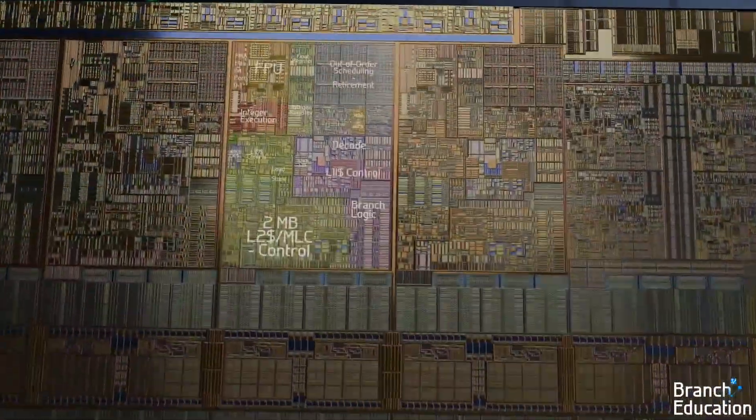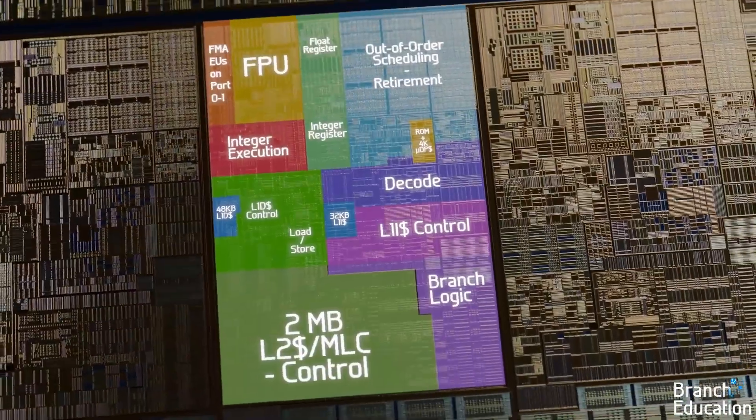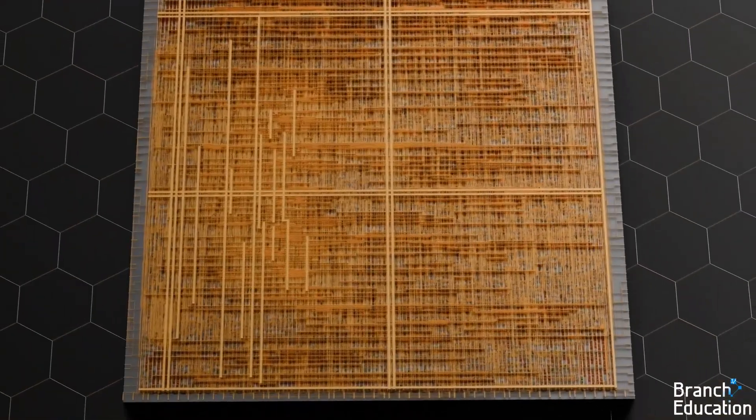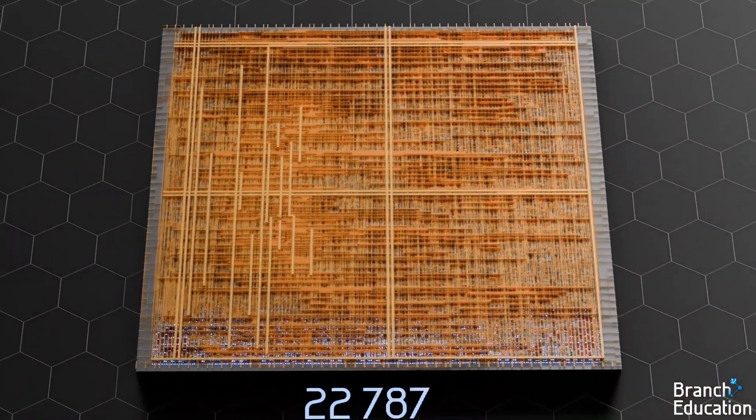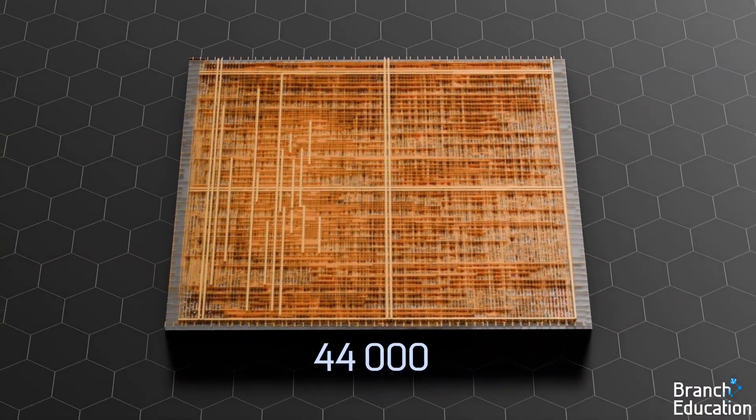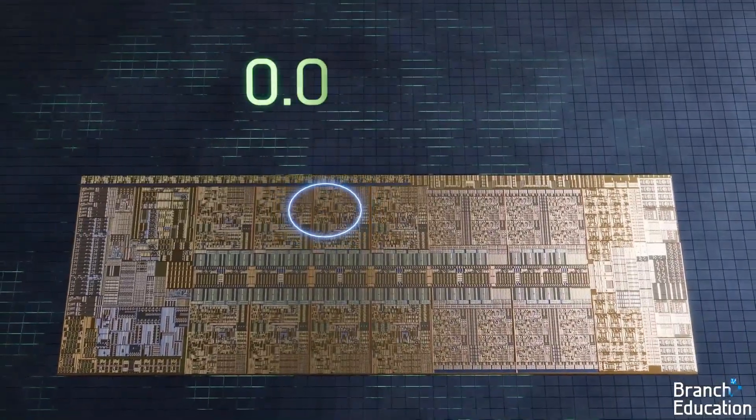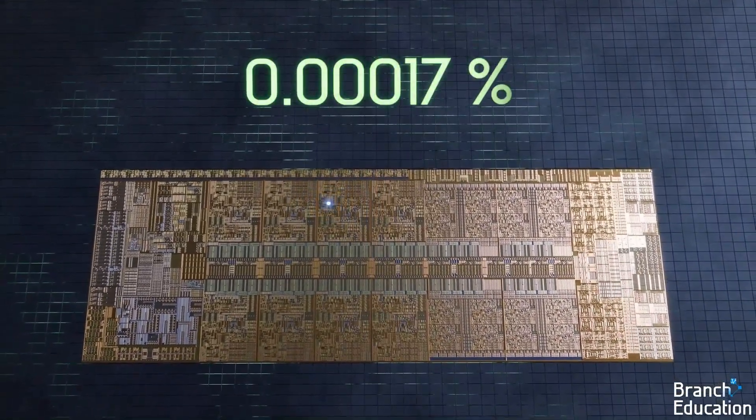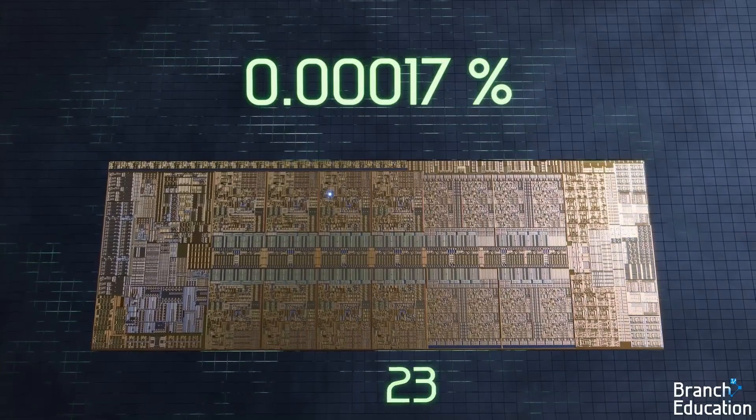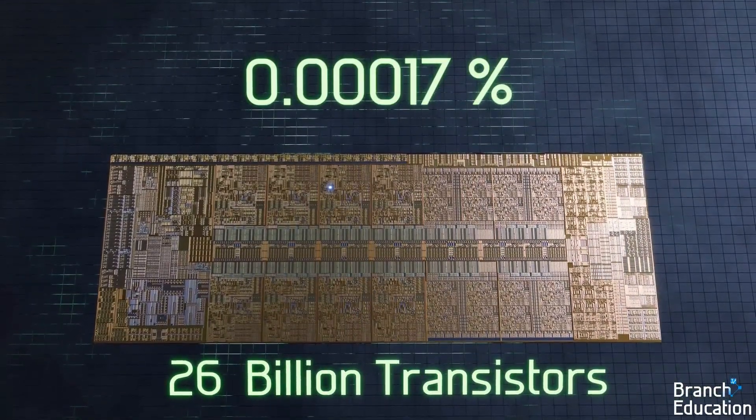Within one of the cores we can see its block diagram and the various elements. Zooming in on this multiply block, we find a layout of 44,000 transistors that physically execute 32-bit multiplication and constitute just 0.00017% of the overall 26 billion transistors in the CPU.